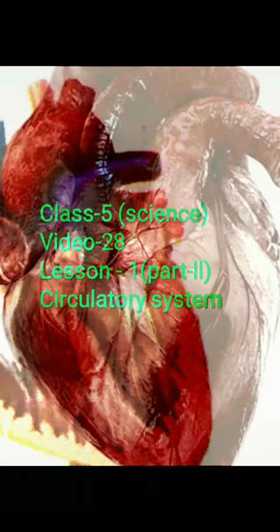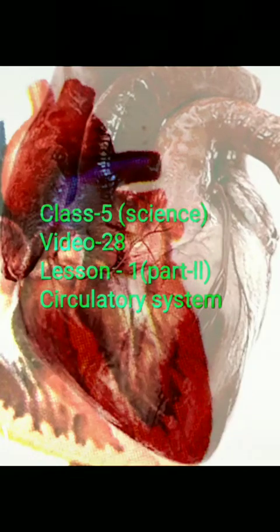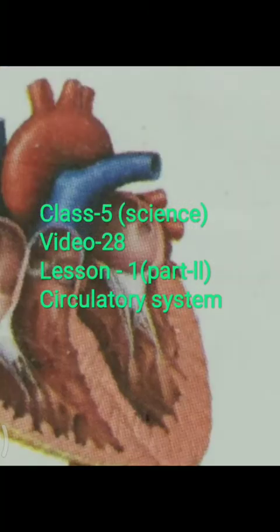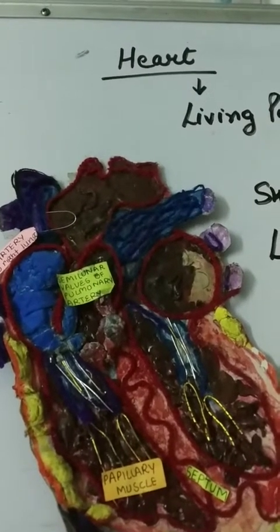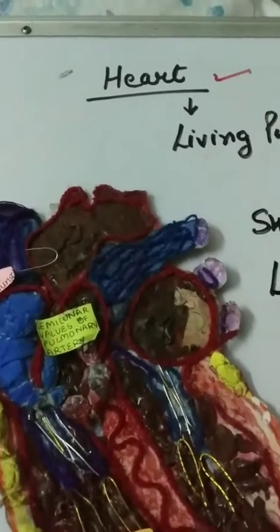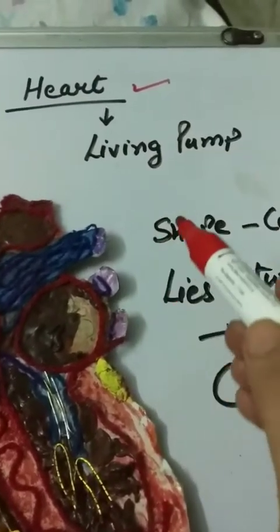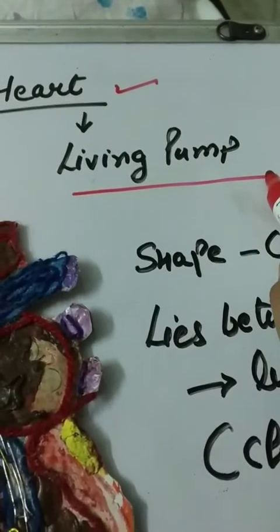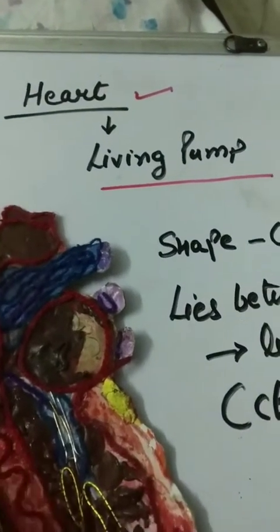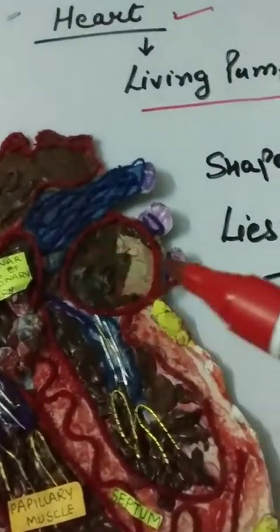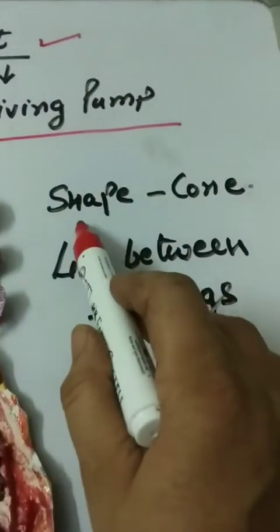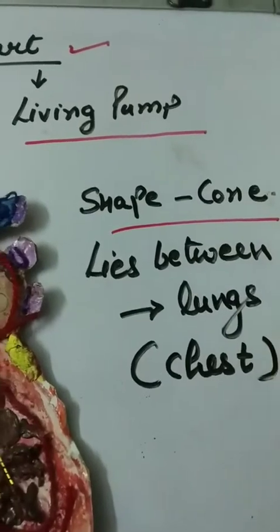Good morning students. This is video number 28 of class 5 science. We will continue with the circulatory system chapter — it is part 2 of lesson number 1. Let's continue with the heart. What is a heart? Heart is a living pump in the human body. It is the size of a fist and it is shaped like a cone.